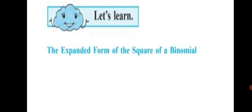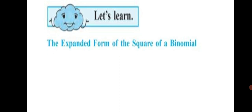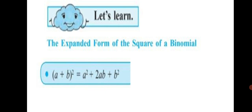Let's learn the expanded form of the square of a binomial. Dear students, you already know what a binomial is. Now we are going to find the expanded form of the square of a binomial. Suppose we take the binomial a plus b — there are two variables, and it forms a binomial.